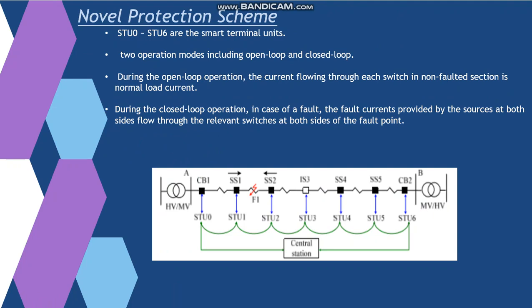On the screen you can see the distributed protection scheme for the distribution system. During the open-loop operation, the current flowing through each switch in non-faulted section is normal load current. During the closed-loop operation, in case of a fault, the fault currents provided by the sources at both sides will flow through the relevant switches at both sides of the fault point.